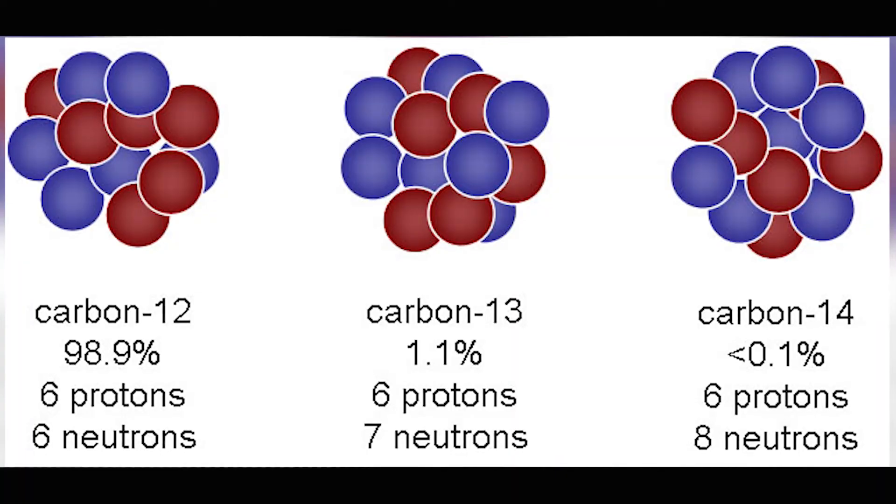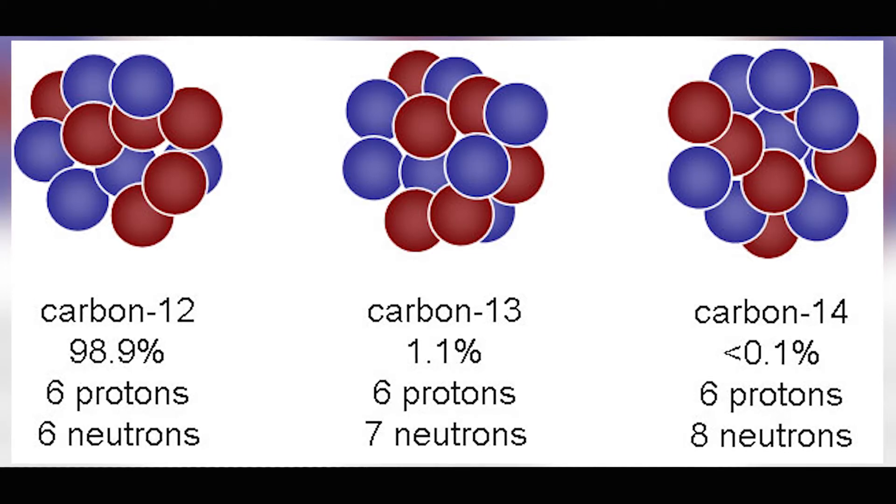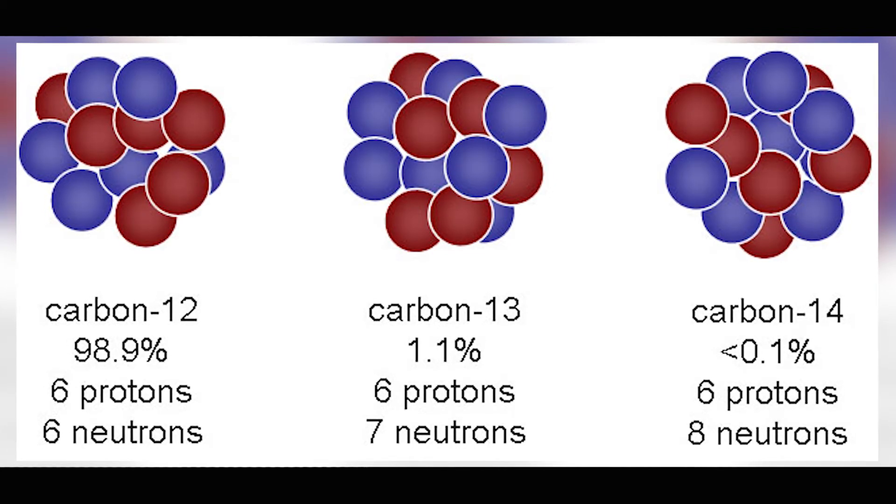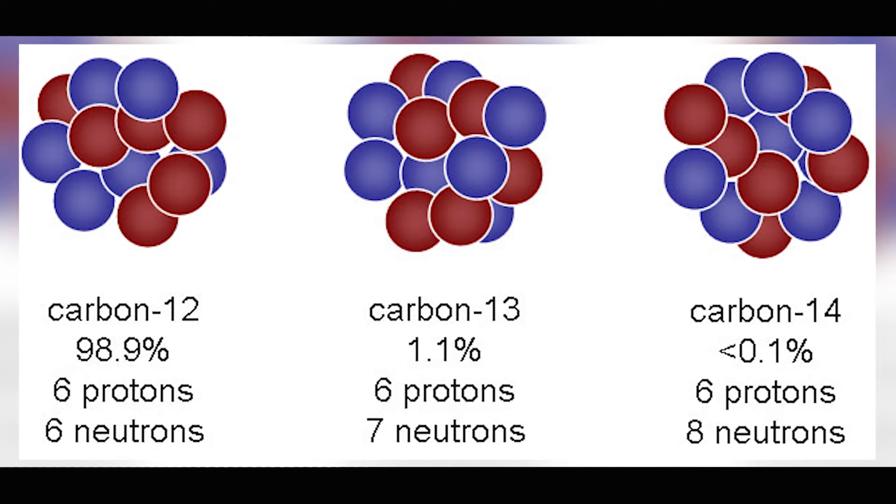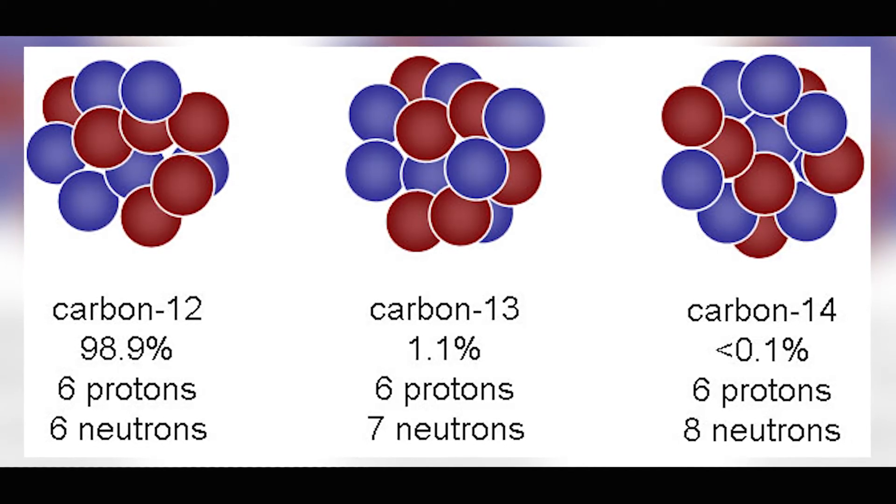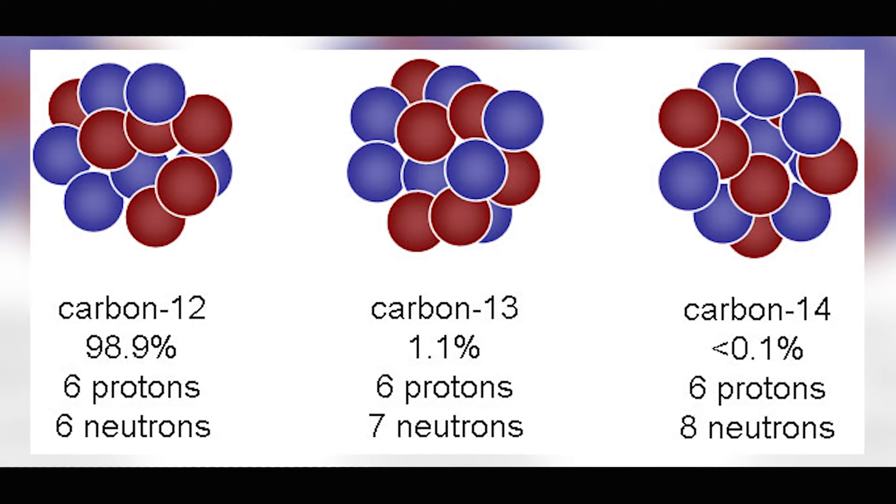For example, one of the most common and simple isotopes to talk about is in carbon. Carbon has six protons and a lot of times you'll find it with six neutrons. Since protons and neutrons have most of the mass in an atom, you have six plus six and you're going to have a mass of twelve for carbon. This is the most stable arrangement for carbon.